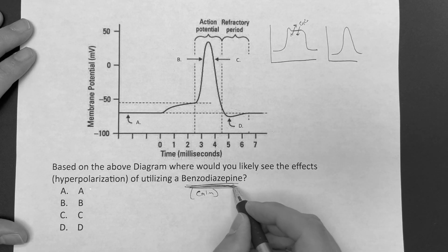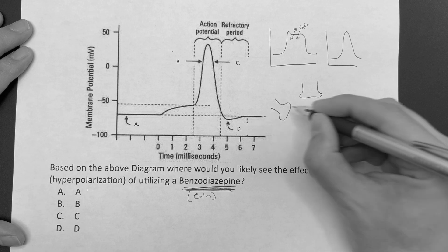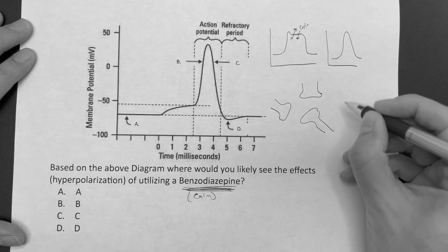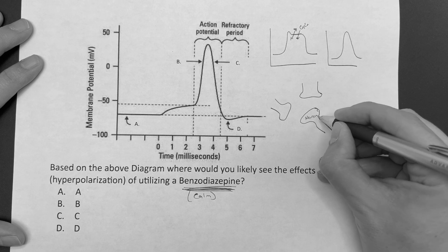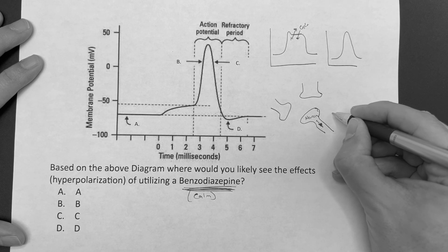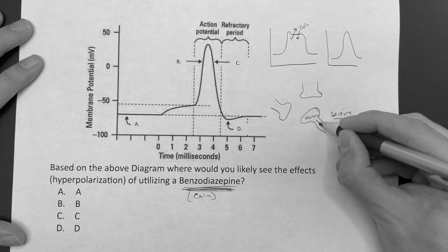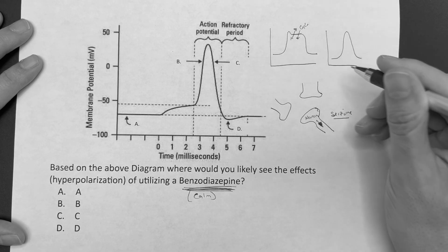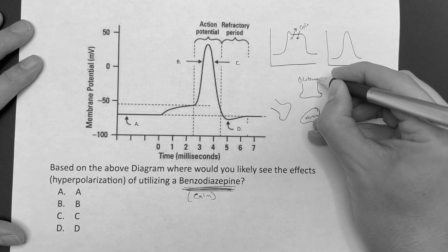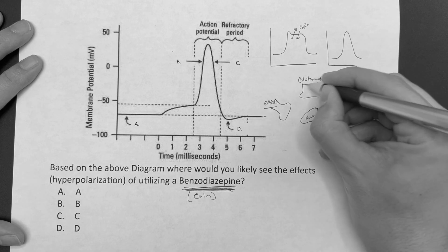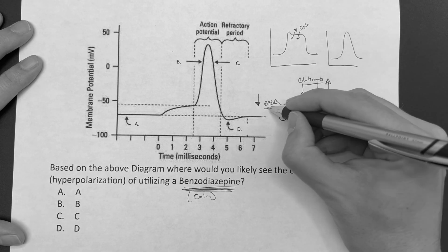So what do we know about a benzodiazepine? When it comes to either too much or too little firing of a neuron, you should be thinking glutamate or GABA. Glutamate is the one that's going to be increasing and activating. GABA is more on the downside — the calming nature of it.